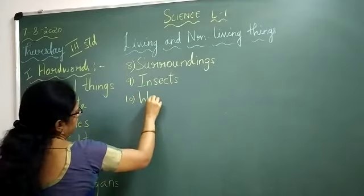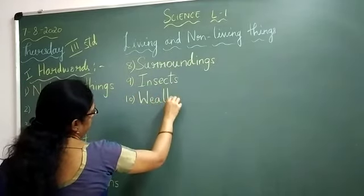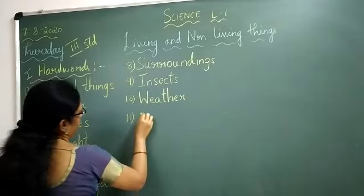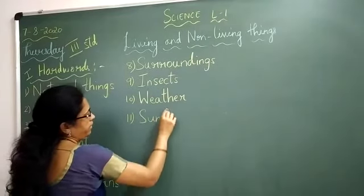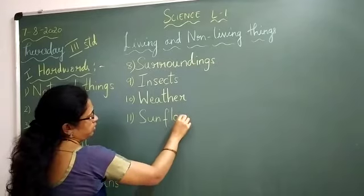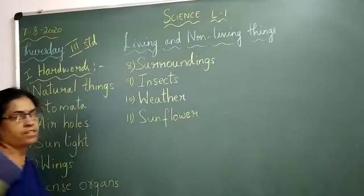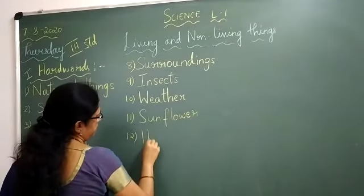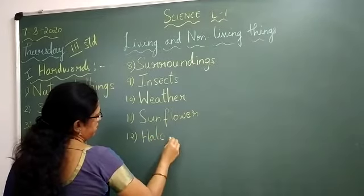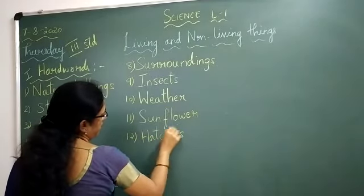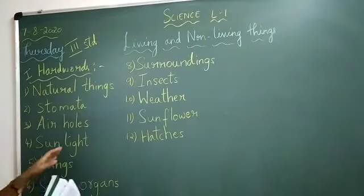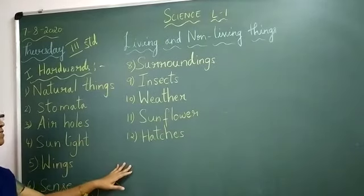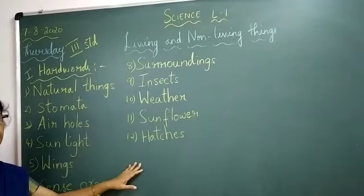Tenth one: weather. W-E-A-T-H-E-R, weather. Eleventh one: sunflowers. S-U-N-F-L-O-W-E-R, sunflowers. Twelfth one: hatches. H-A-T-C-H-E-S, hatches. Okay, these are the words, children. You have to write in the classwork one time and repeat these words. Each word, so I can give homework for you.